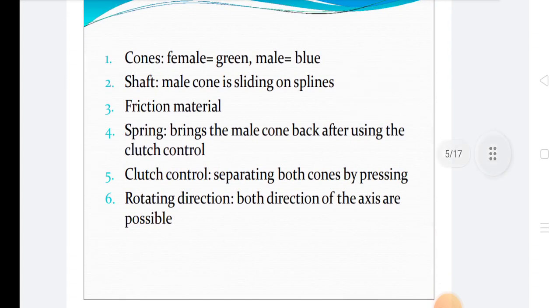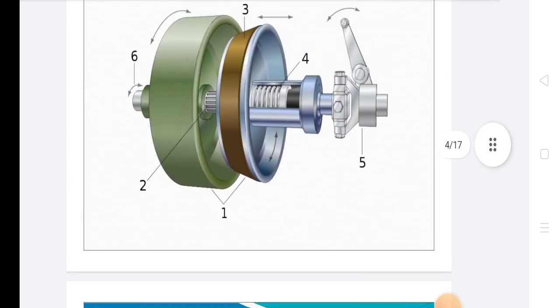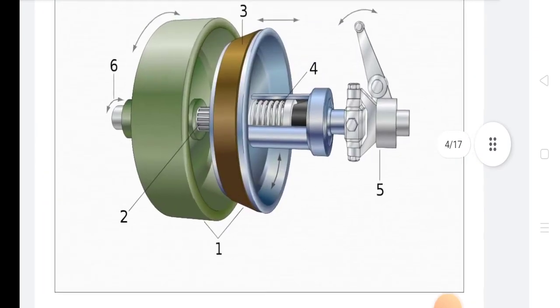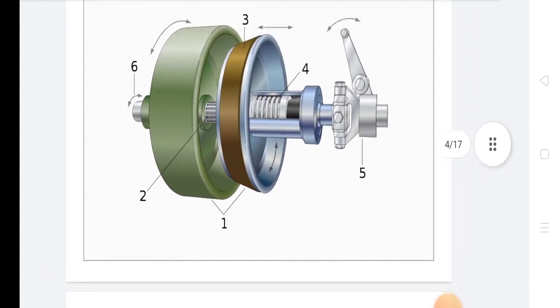The spring brings the male cone back after using the clutch control. The clutch control separates both cones by releasing contact. Both directions of rotation along the axis are possible.